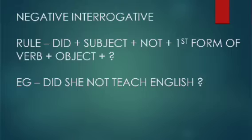Negative Interrogative: Did plus subject plus not plus first form of verb plus object plus question mark. Example: Did she not teach English?